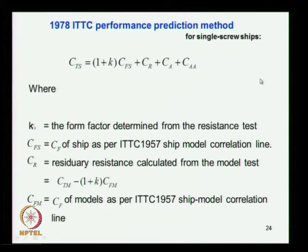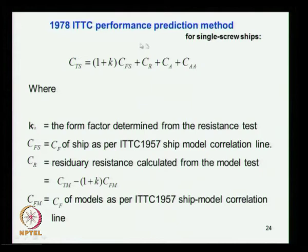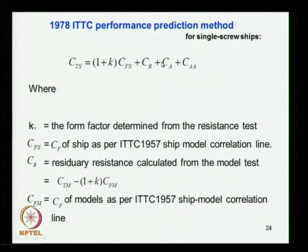You might notice that the form factor was not considered in the ITTC 1957 method — the effect of form was ignored. This was noticed and understood, and ITTC came out in 1978 with a modified prediction method. In the 1978 method, CTs equals (1 plus k) times CFs plus Cr plus CA plus CAA, where k is the form factor, CFs is from the ITTC 1957 friction formula, Cr is the residual resistance coefficient, CA is the model-ship correlation allowance for roughness, and CAA is the air resistance.